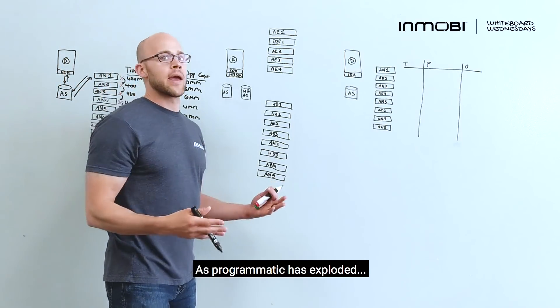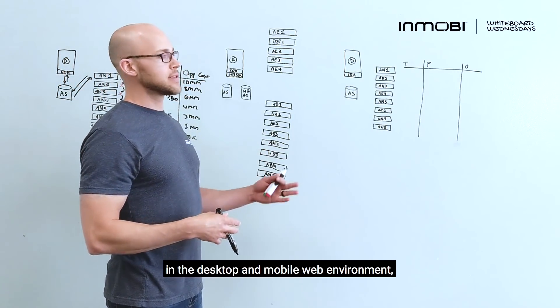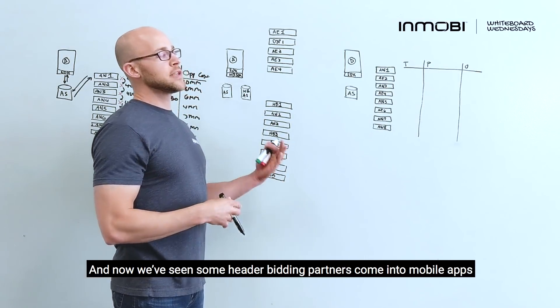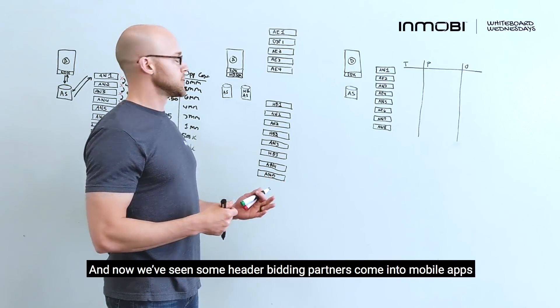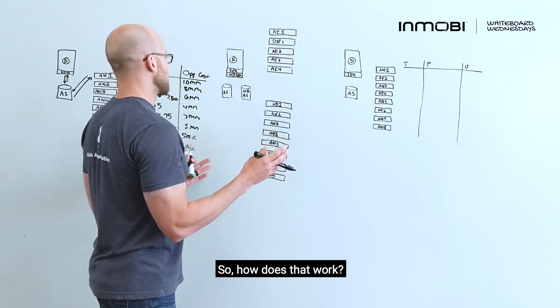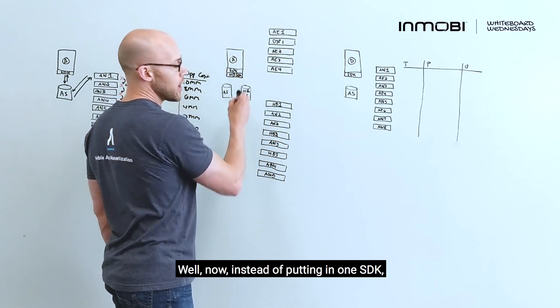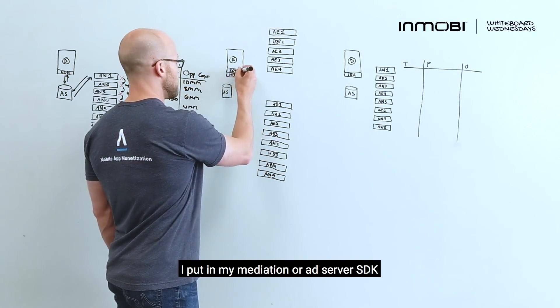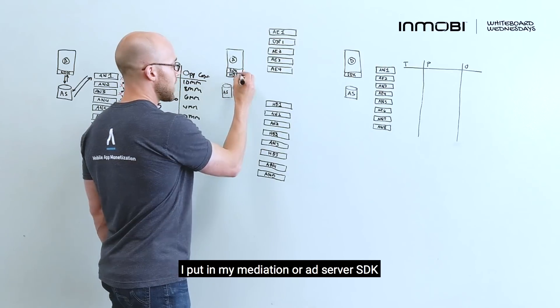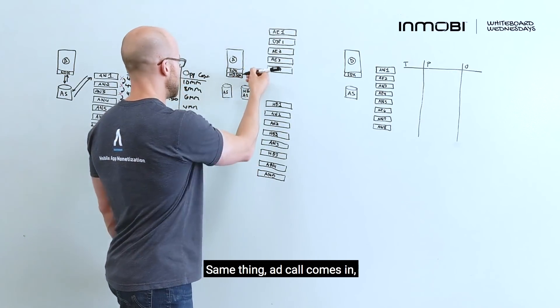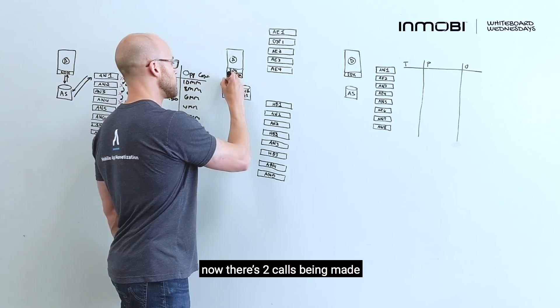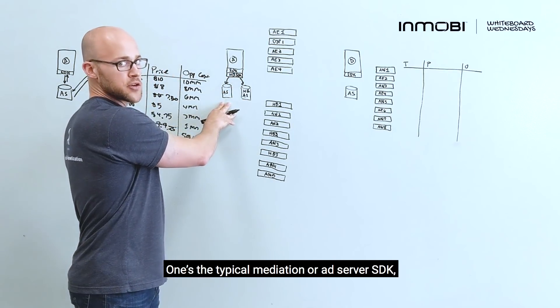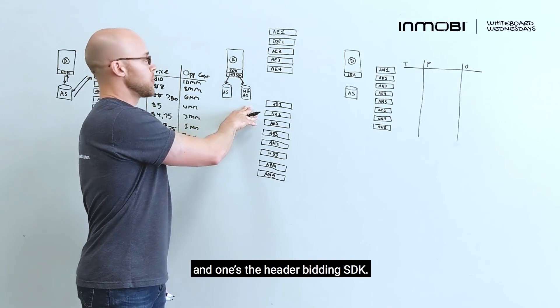As programmatic has exploded in the desktop and mobile web environment, header bidding came into play, and now we've seen some header bidding partners come into mobile apps. So how does that work? Well, now instead of putting in one SDK, the app developer has to put in two SDKs. I put in my mediation or ad server SDK, and now I'm putting in my header bidding SDK. Same thing, ad call comes in. Now there's two calls being made. One to the typical mediation or ad serving SDK, and one to the header bidding SDK.